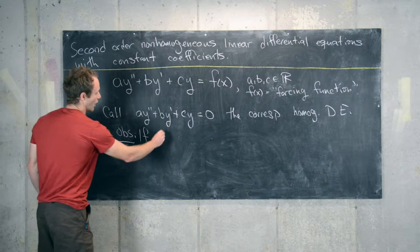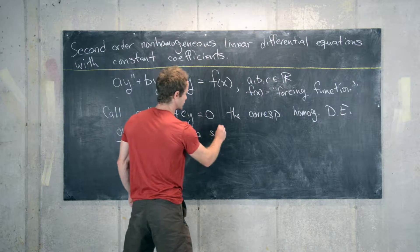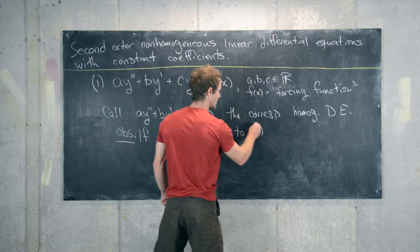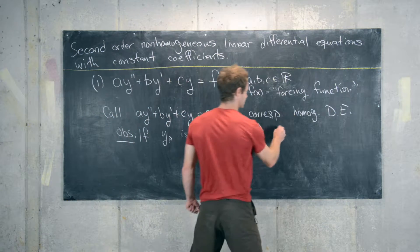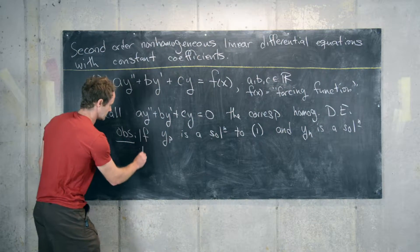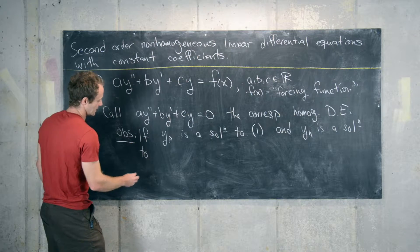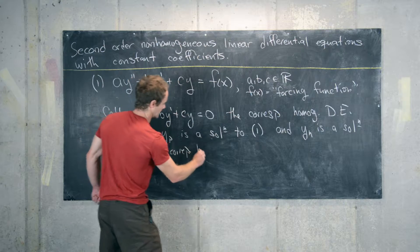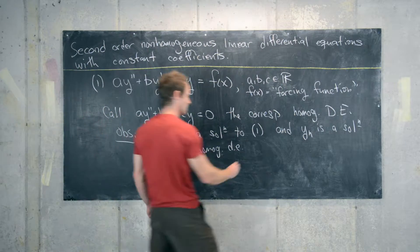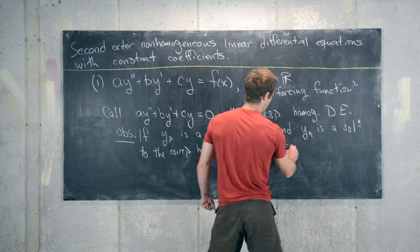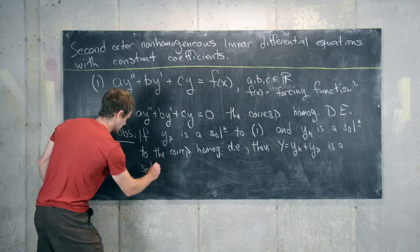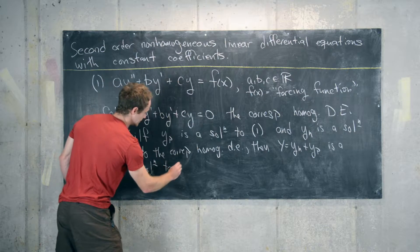If yp is a solution to the non-homogeneous differential equation — let's label that equation one — and yh is a solution to the corresponding homogeneous differential equation, then capital Y, which equals yh plus yp, is a solution to equation one.